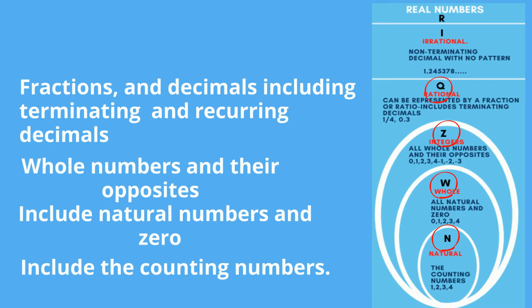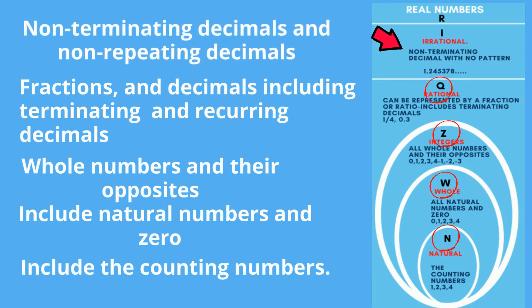They are represented by a Q. Irrational numbers include non-terminating decimals and non-repeating decimals. Pi is an example. They are represented by I.